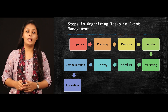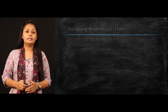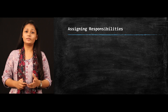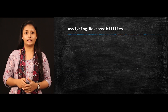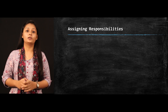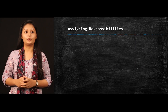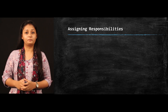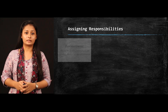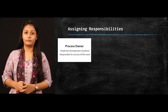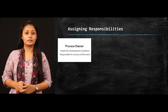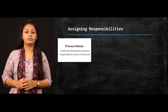Now let's have a look at assigning responsibilities. As we have earlier studied, the technical staff involves many people in event management. The first is the process owner. Process owners, similar to decision makers, are responsible for the success of the event.